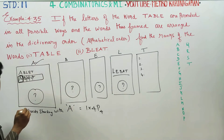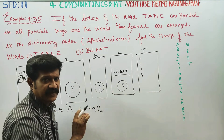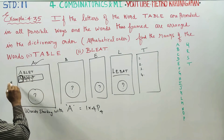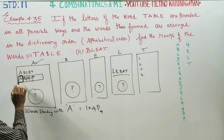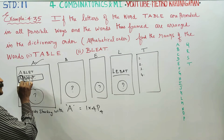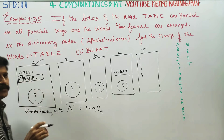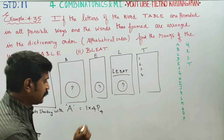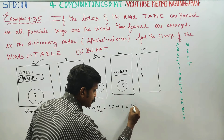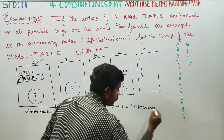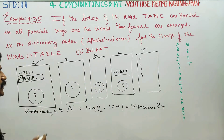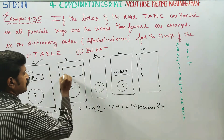Page starting with A gives 24 words. That is 1 into 4P4, which is 4 factorial = 4 into 3 into 2 into 1 = 24. First page is over. Second page: B is next.